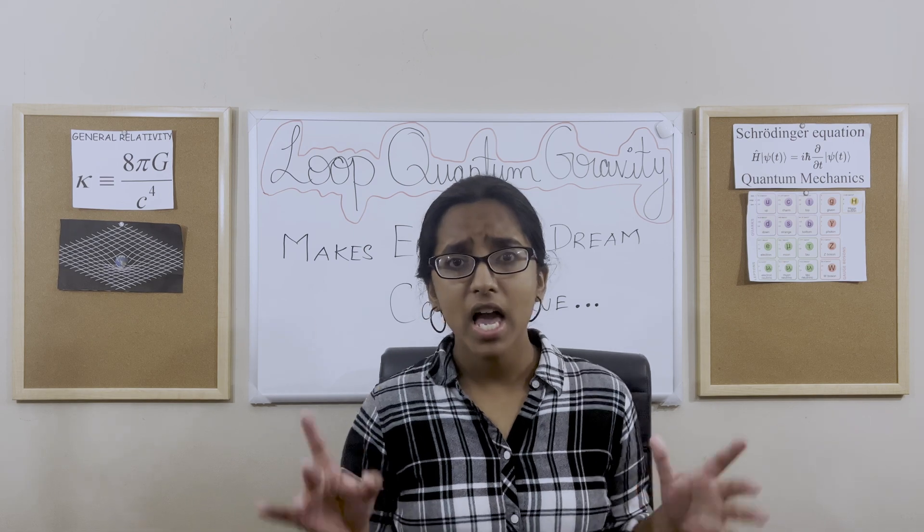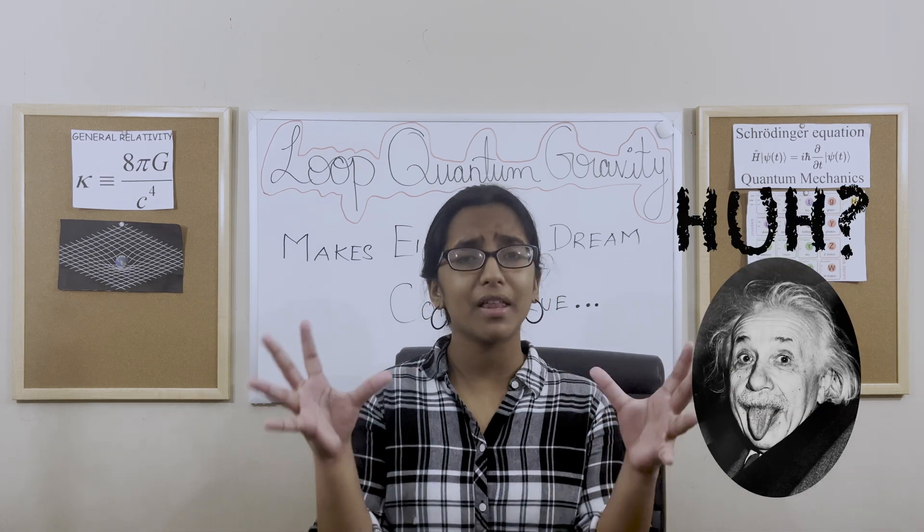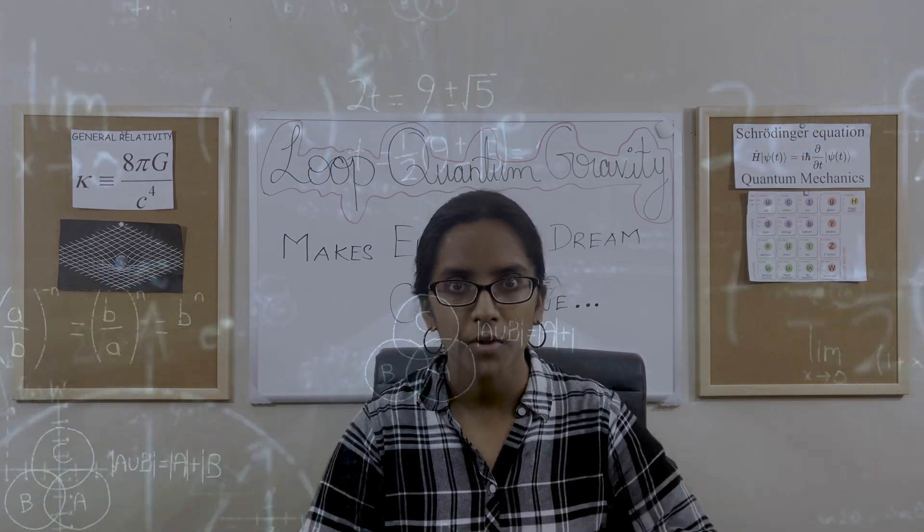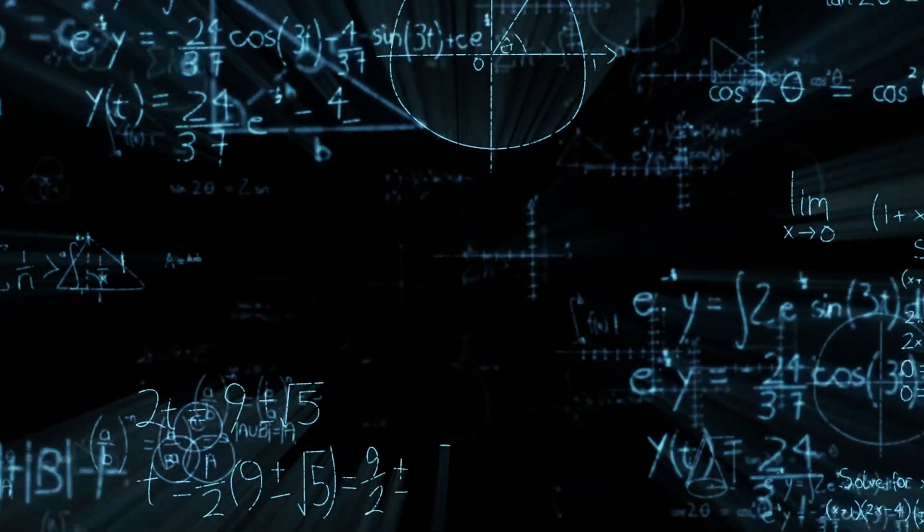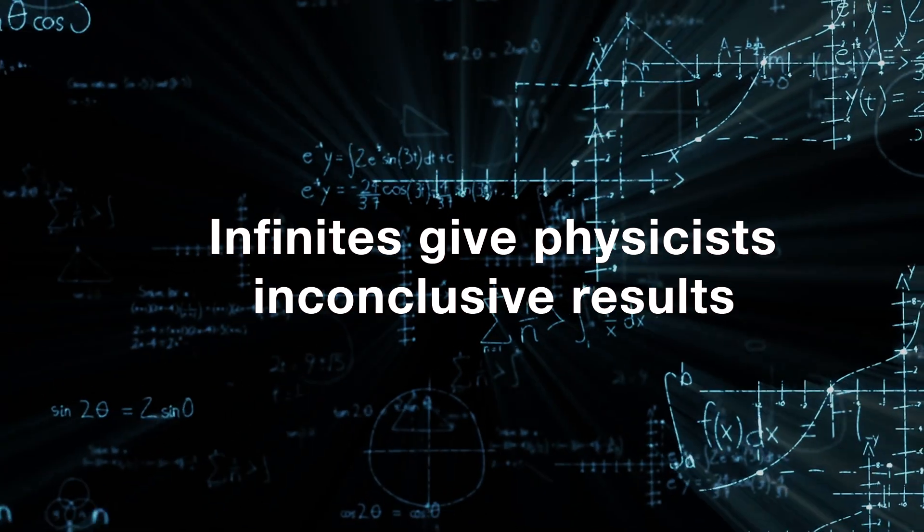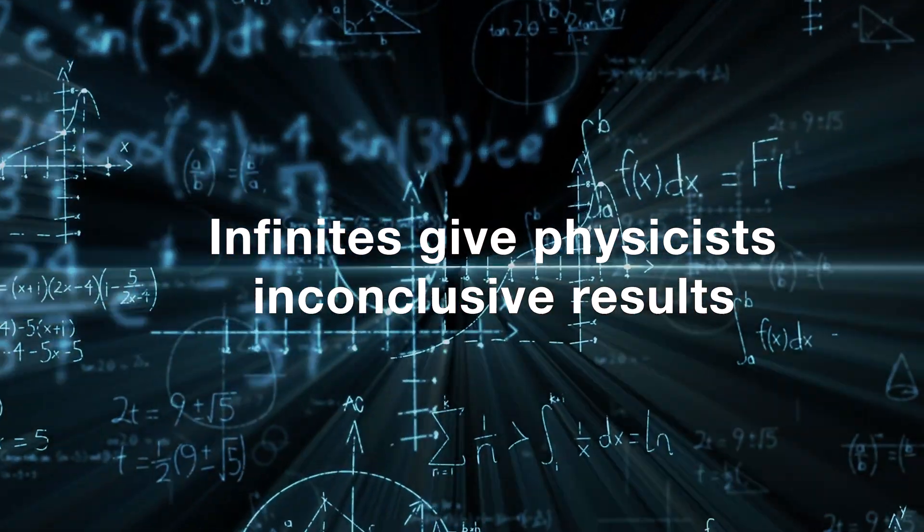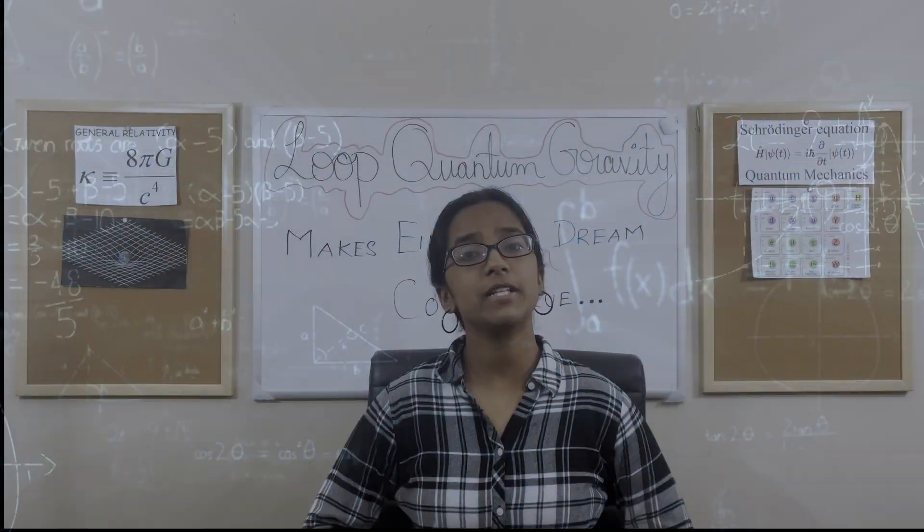But this is not easy. Even the great mind of Einstein was perplexed when trying to put these two theories together. The process comes with infinities and conceptual difficulties everywhere. And you know, if you see infinities in physics, that's a big problem.